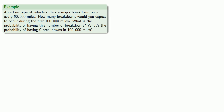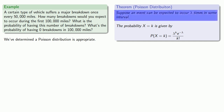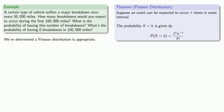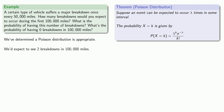We've determined that a Poisson distribution is appropriate. In order to calculate the Poisson distribution, we need to know the number of times the event can be expected to occur. If breakdowns typically occur once every 50,000 miles, then in 100,000 miles we'd expect to see lambda equals 2 breakdowns.